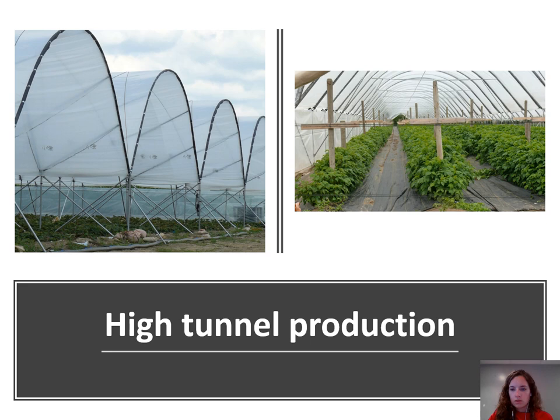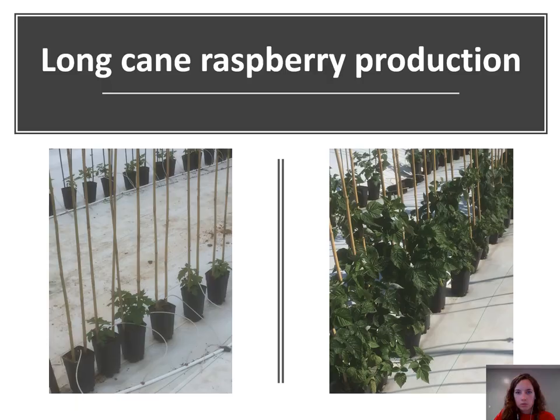Growers will also produce raspberries in tunnels or protected structures. These tunnels protect the raspberries from rain and wind and also help extend the season by providing some extra warmth. Long cane raspberry production is a relatively new system in Ontario where raspberries are grown in soilless substrate in a protected system, such as high tunnels or in an umbrella system.